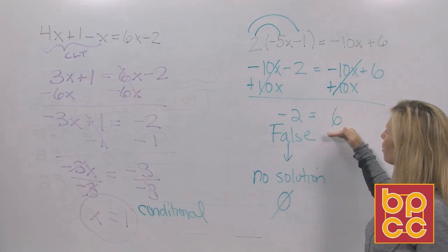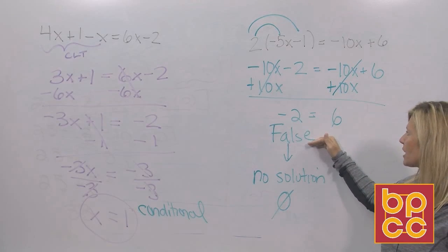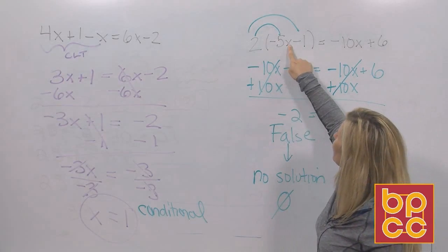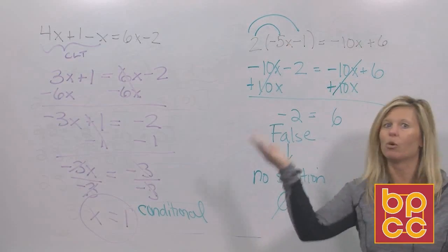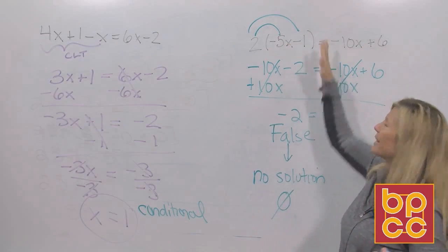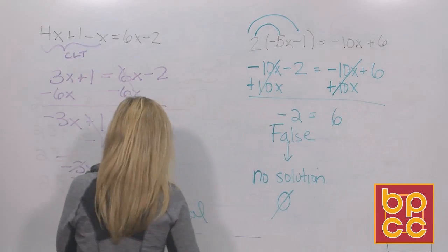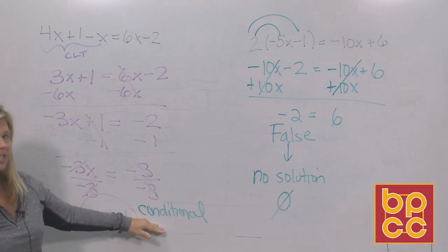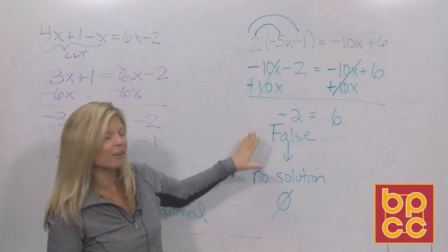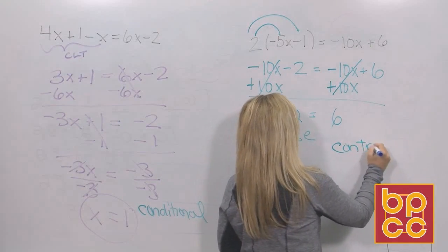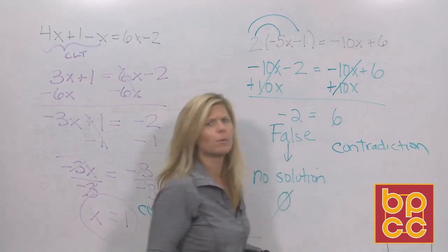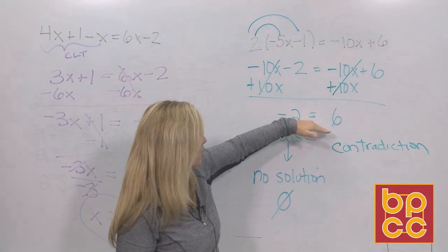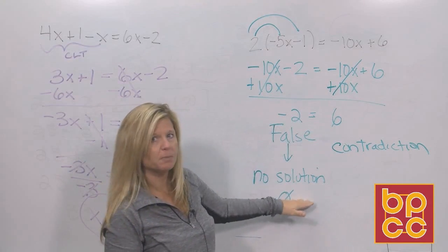Every time you're solving and you lose your variable and get a false statement, there will never be an answer. No matter what number you pick for x on the left and right, it will never balance. What do we call this? If having a solution is called conditional, then having no solution — having a false statement — is called a contradiction. A contradiction in real life means something that doesn't agree, and every time you end up with a contradiction, your answer will always be no solution.